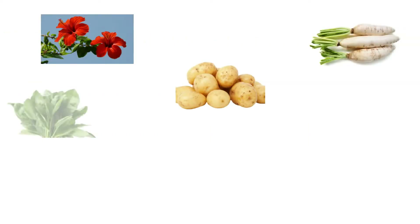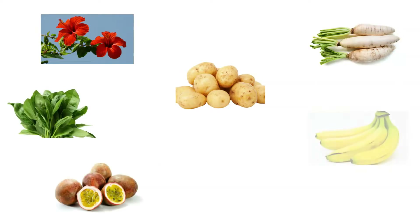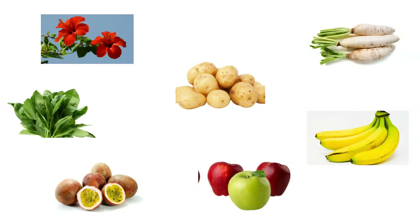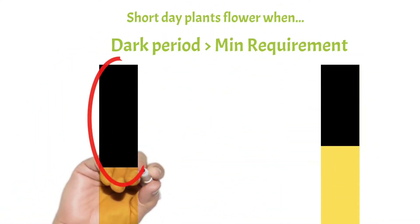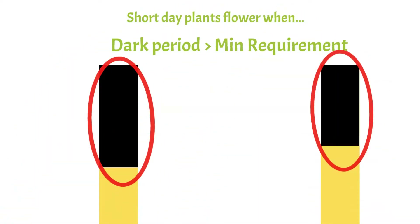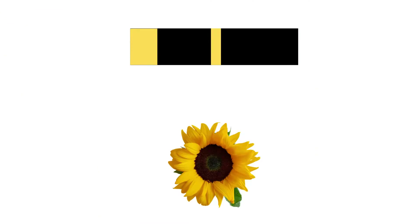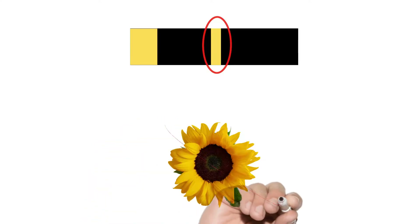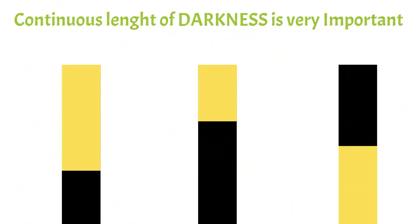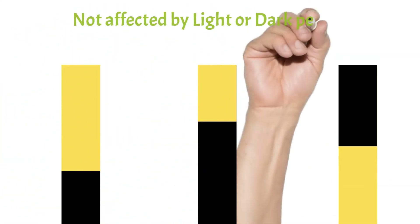Short day plants flower when the dark period is longer than the minimum requirement. If the dark period in these plants is interrupted by even a flash of light for a few minutes, flowering will be affected — so a continuous length of darkness is very critical. Examples of short day plants include onion, strawberry, and pineapple.